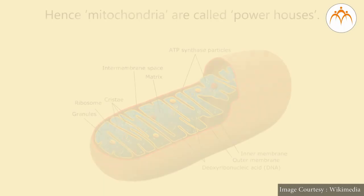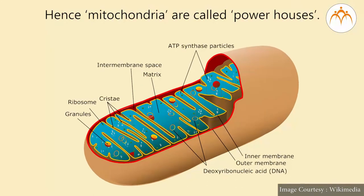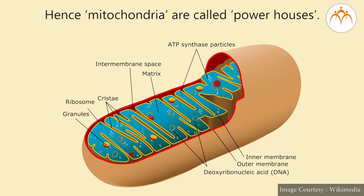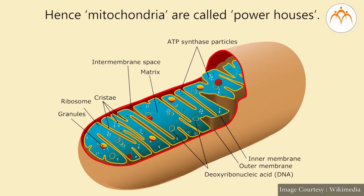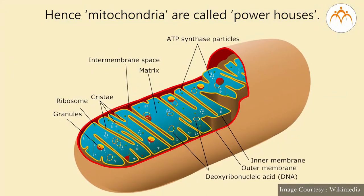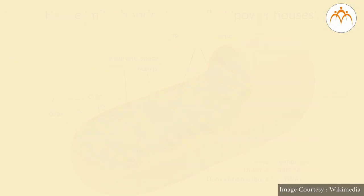For all these life processes, the body needs a lot of energy. This energy is produced by mitochondria from cells. Hence, mitochondria are called powerhouses or ATP-producing factories of the cell. This is called cellular respiration.